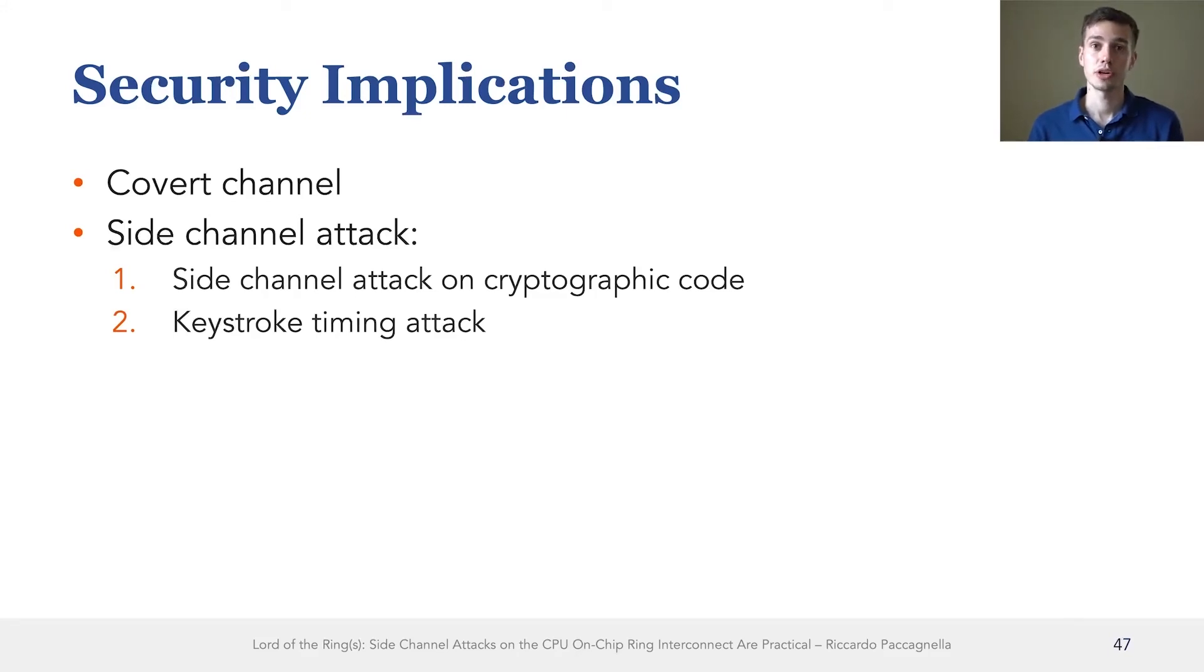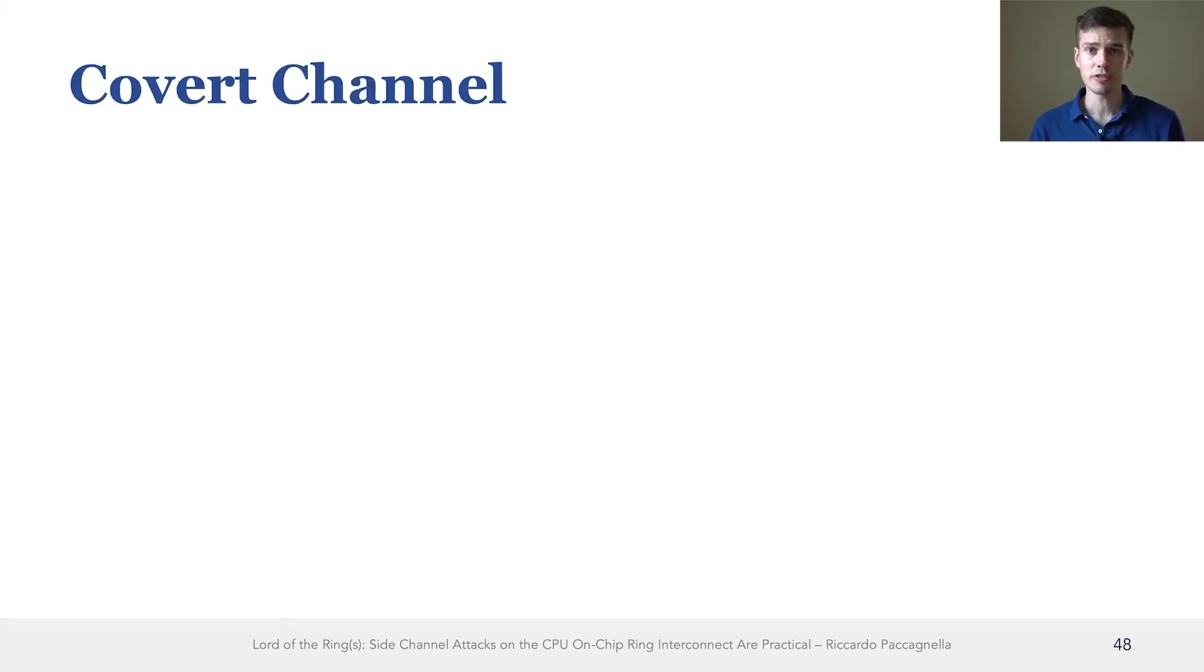So in this part, I will talk about a covert channel and a side channel attack that we built using the findings from the first part of the talk. Let's start from the covert channel. The high level idea of the covert channel is to have two processes, a sender and the receiver. They are normally not authorized to communicate with each other, but they're still trying to exchange information.